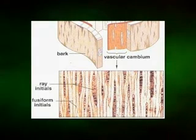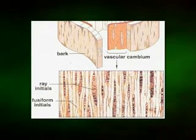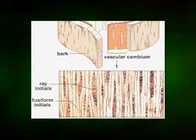Following periclinal longitudinal divisions, the mother cells in gymnosperms differentiate into functional sieve cells, generally with little or no longitudinal intrusive growth. The mature sieve cells, like the fusiform cambium initials from which they are derived, are very long with overlapping ends. By contrast, in dicotyledons, transverse, anticlinal and/or oblique divisions in the sieve element mother cells lead to columns of superposed sieve tube members.